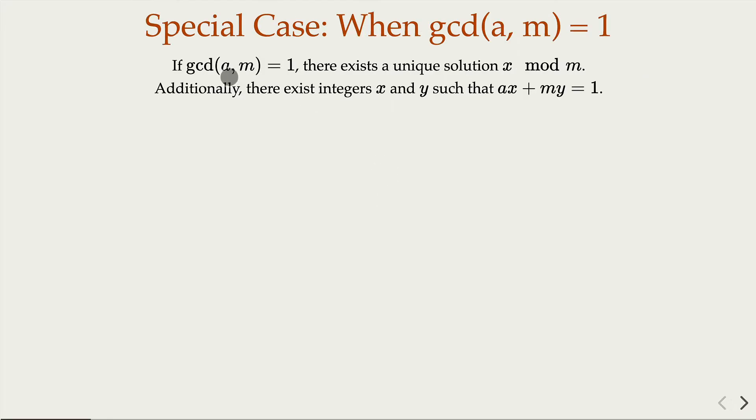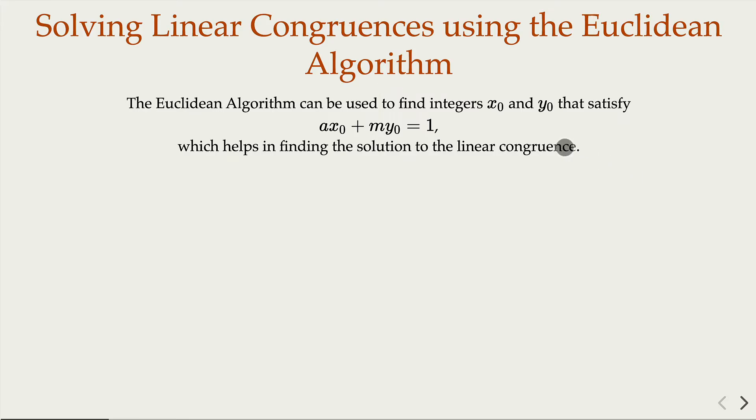And a special case is when a and m are relatively prime. For that case, there's an important property that there exists integer x and y such that ax plus my equal to 1. And the method of finding that is Euclidean algorithm.